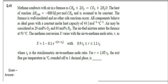Reading the question: methane combusts with air in a furnace as per the given reaction, and the heat of reaction is given and assumed to be constant — it will not vary with temperature. The furnace is well insulated, no side reactions occur, and all components behave as ideal gases with a constant molar heat capacity of 44 J/mol·°C for every species.